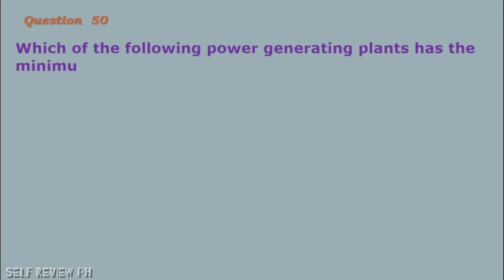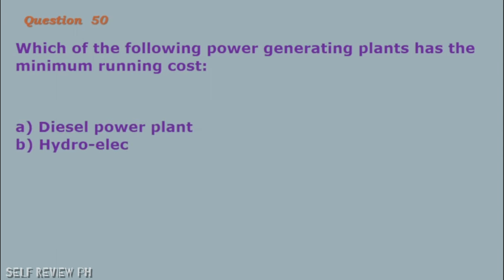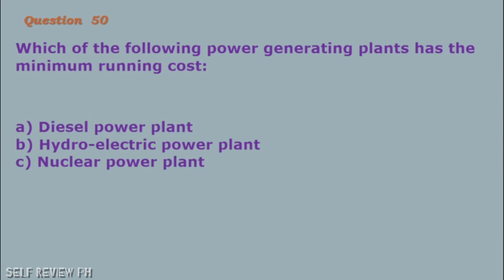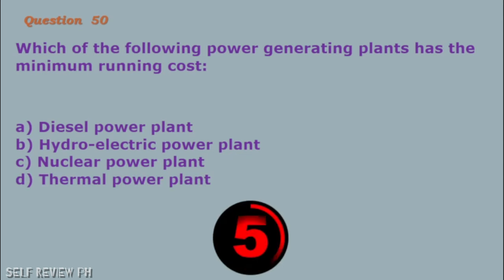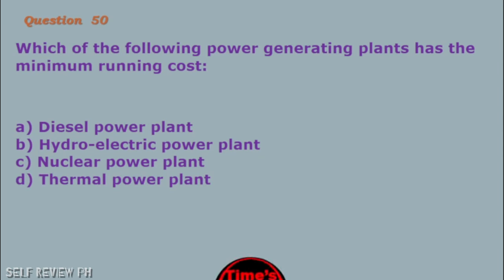Question number 50: Which of the following power generating plants has the minimum running cost? A. Diesel power plant B. Hydroelectric power plant C. Nuclear power plant D. Thermal power plant. The correct answer is letter B, hydroelectric power plant.